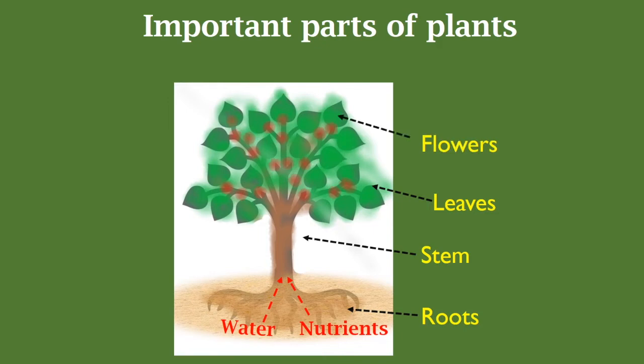The fourth important part is flowers. Flowers produce seeds from which new plants will grow. That means flowers help in the reproduction of plants.